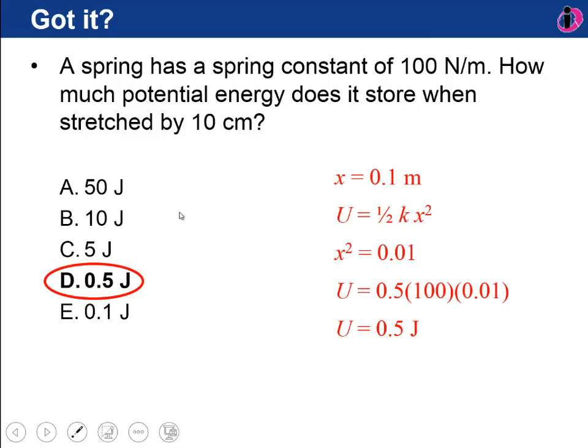Okay, so hopefully you got 0.5 joules. The steps here are first converting to SI units, x equals 10 centimeters. I converted that to meters by dividing by 100, 0.1. Remember the equation for potential energy stored in the spring is one half k x squared. x squared is 0.1 times 0.1. So you've got a half times a hundred newtons per meter times 0.01 meters squared. These are all now in SI units, and you get 0.5. The SI unit of energy is joules.